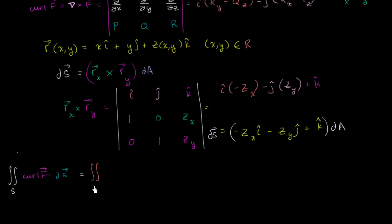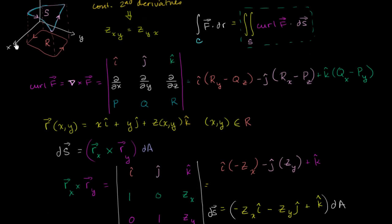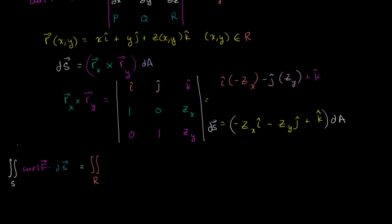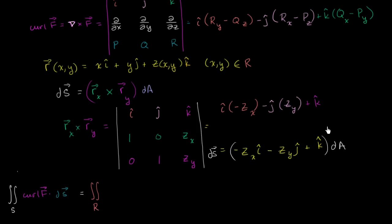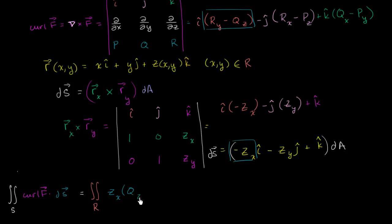We take the dot product of the curl of F with dS — all of this business right over here. Let's think about the x components. You multiply the two; the negatives cancel when we swap the order. You get the partial of z with respect to x, times the partial of Q with respect to z minus the partial of R with respect to y.